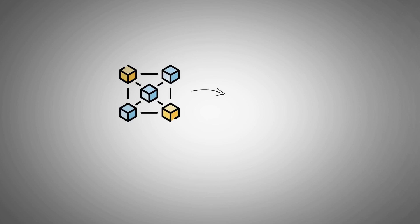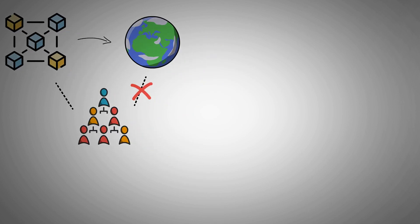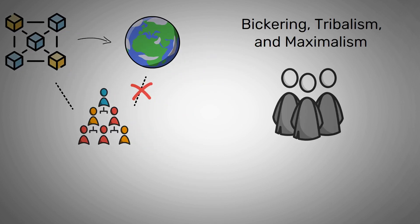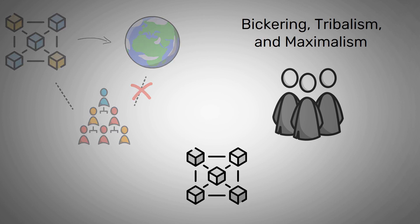At the moment, a blockchain tends to act as its universe with almost no way to communicate with the world outside of its network without third-party help. As a result, bickering, tribalism, and maximalism among the supporters of various different blockchains have become the norm. But can there be one blockchain to unite them all?